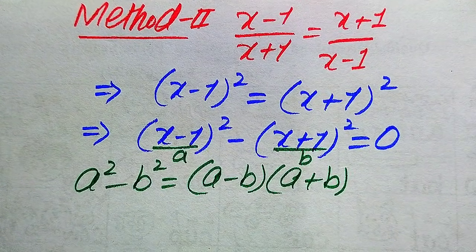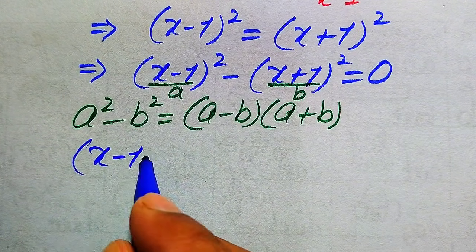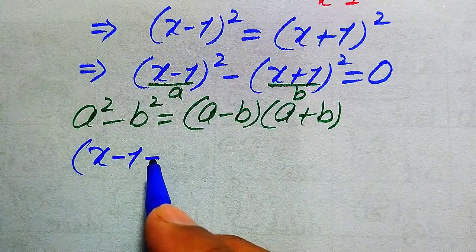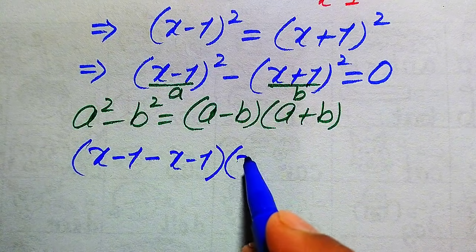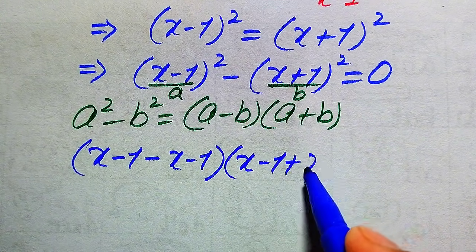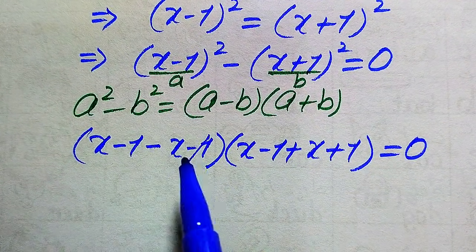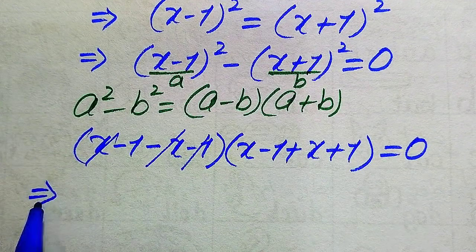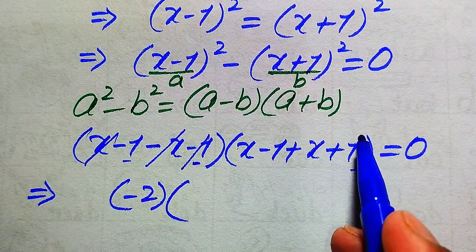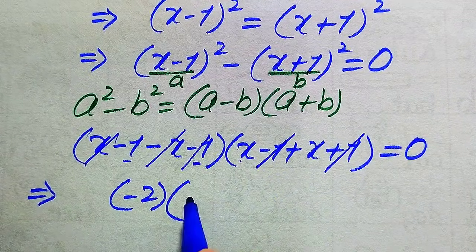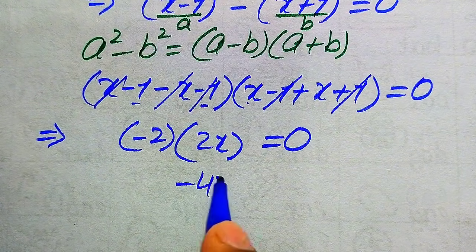Applying the formula, we write: [(x - 1) - (x + 1)][(x - 1) + (x + 1)] = 0. In the first factor, distributing the negative sign: x - 1 - x - 1 = -2. In the second factor: x - 1 + x + 1 = 2x. So we get (-2)(2x) = 0.